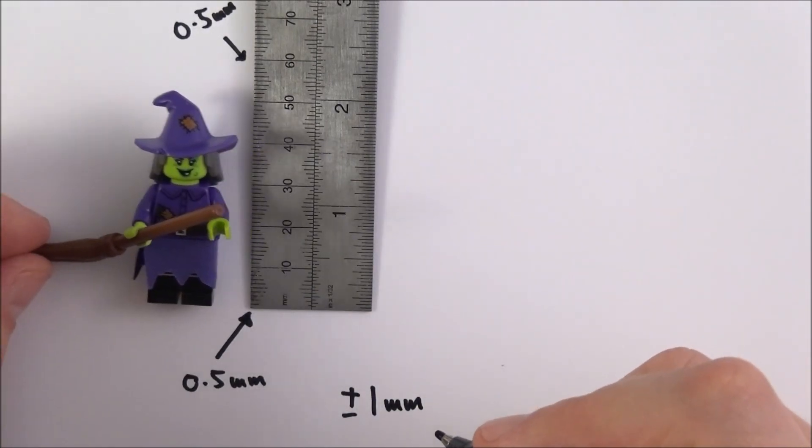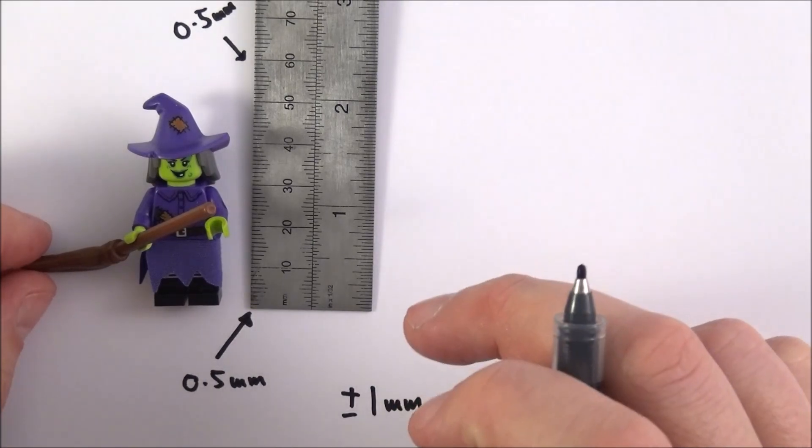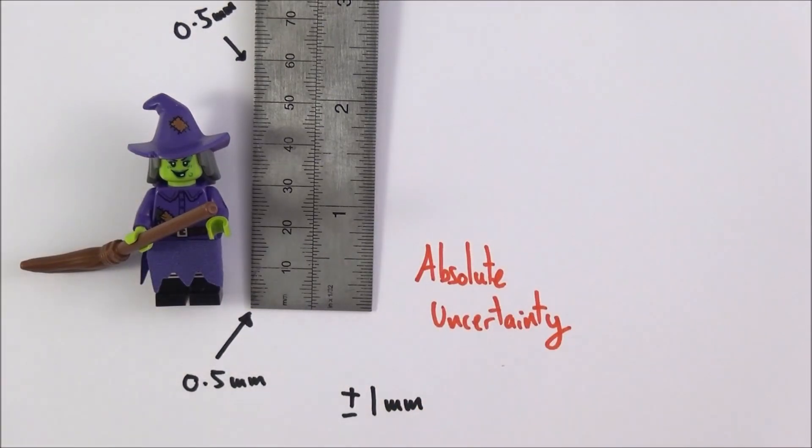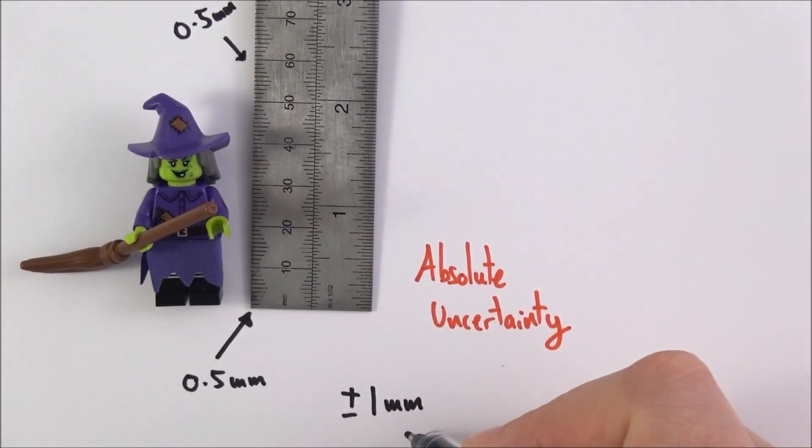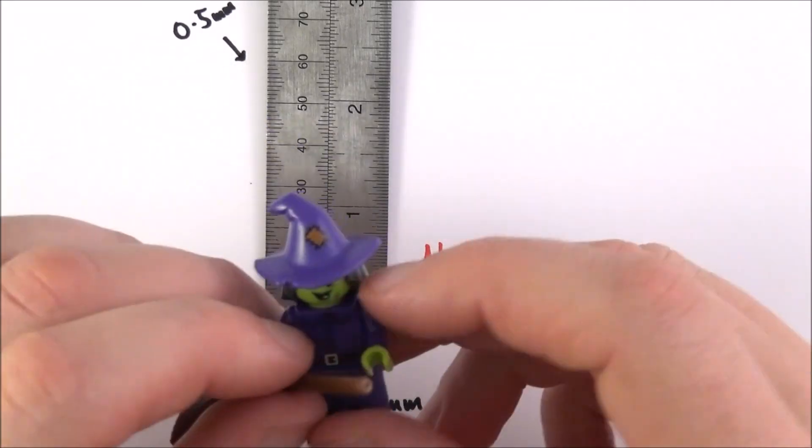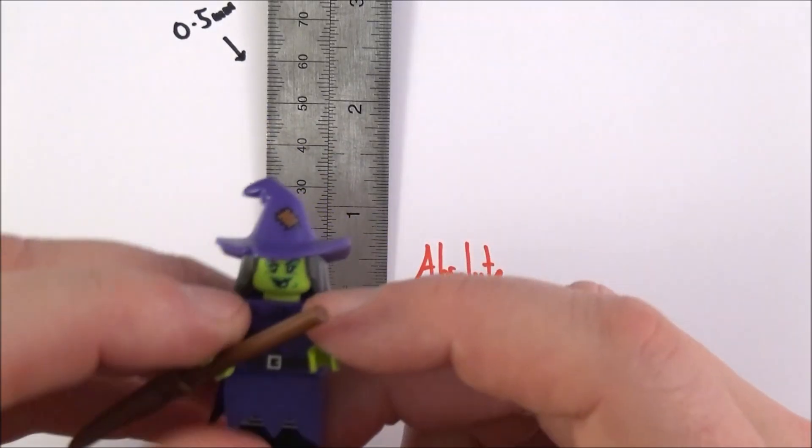Now this is what we call the absolute uncertainty. The absolute uncertainty is the uncertainty in the distance or the quantity that we are measuring, but there are things that we can do to maybe decrease the absolute uncertainty.